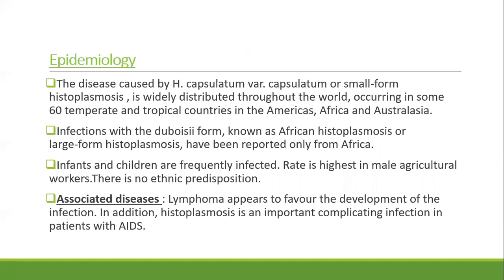The disease caused by Histoplasma capsulatum var. capsulatum, the small-form histoplasmosis, is widely distributed throughout the world, occurring in some 60 temperate and tropical countries in the Americas, Africa, and Australasia. Infections with the duboisii form, known as African histoplasmosis or large-form histoplasmosis, are reported mainly from Africa. Infants and children are frequently infected; the rate is highest in male agricultural workers with no ethnic predisposition. Associated lymphoma appears to favor the development of infection, and histoplasmosis is an important complication of AIDS.